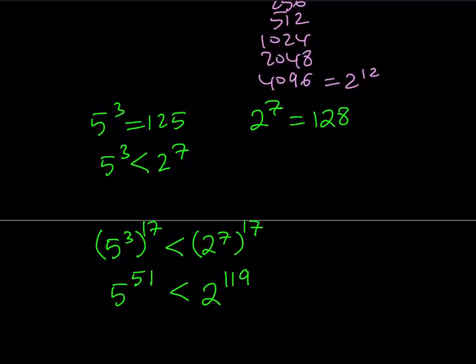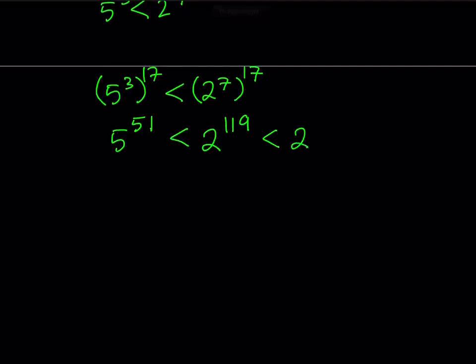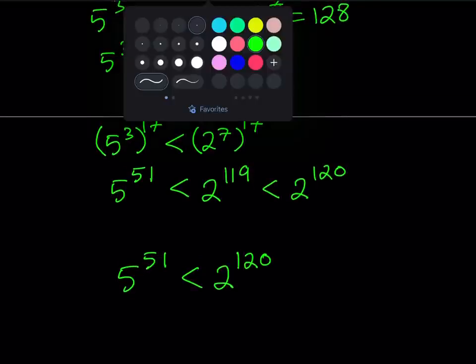Now, I was able to get that 5 to the power of 51 is less than 2 to the power of 119. But in the original problem, remember that I'm supposed to compare 5 to the 51 to 2 to the power of 120, which is 2 times the right-hand side. So, what is that supposed to mean? Well, I can safely say that 2 to the power of 119 is less than 2 to the power of 120 because 119 is less than 120, right? And 2 is greater than 1. So, this is satisfied. Therefore, by using the transitive property of inequalities, I can safely say that 5 to the power of 51 happens to be less than 2 to the power of 120 because it's already less than 2 to the power of 119, which is less than 2 to the power of 120. So, it's obviously less than 2 to the power of 120.